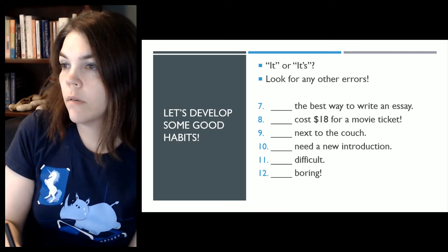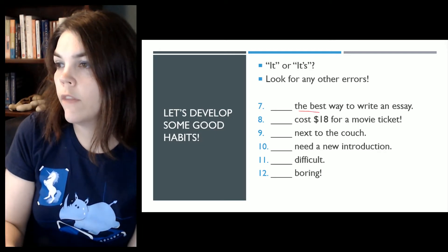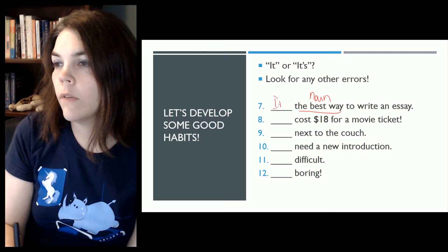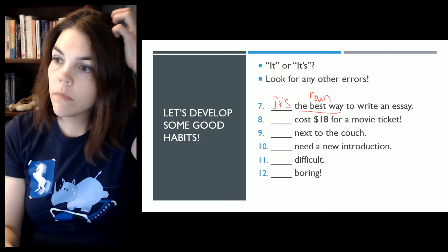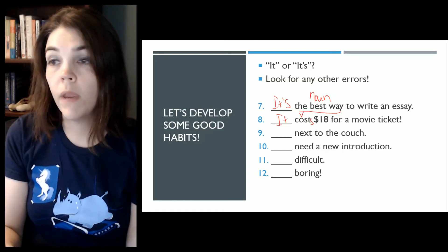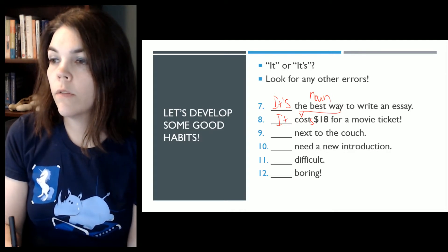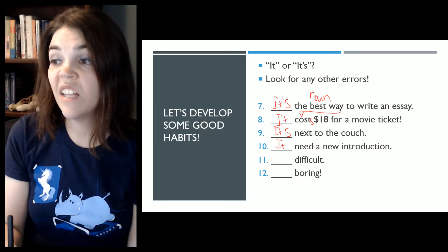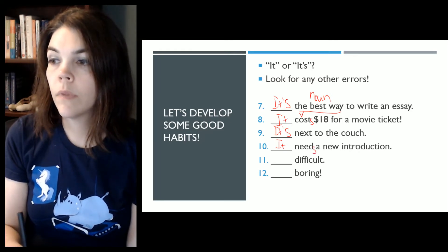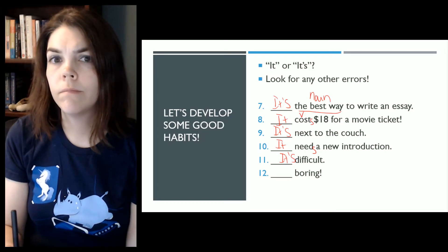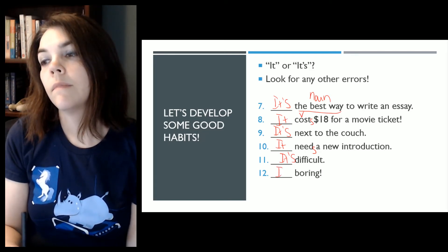Number seven. We see here that this is a noun. The best way, adjective, noun, noun phrase. So it's. What about eight? It costs. Because this is your main verb, right? This one is it's next to the couch. Ten. It needs a new introduction. Eleven. Difficult. It's. And boring. It's.